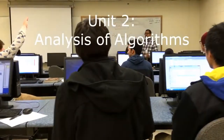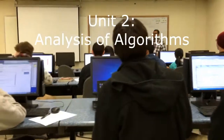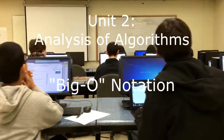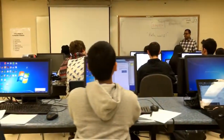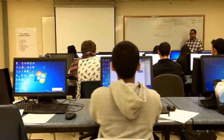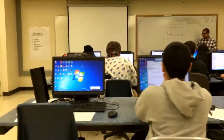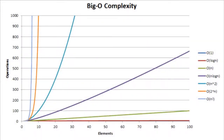The second unit of the course teaches the analysis of algorithms using what is known as big O notation, which is a mathematical representation of an algorithm's speed. This representation can then be compared to other algorithms. Unit 2 is also the only theoretical unit in the class.